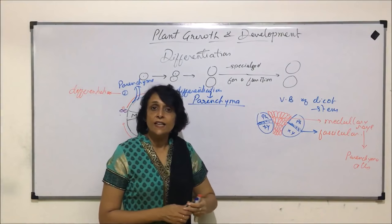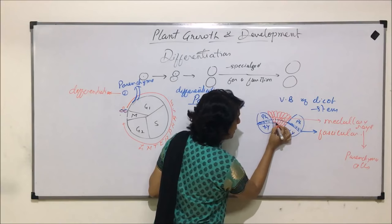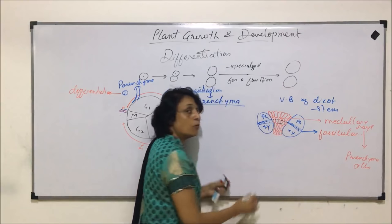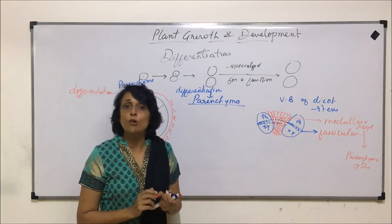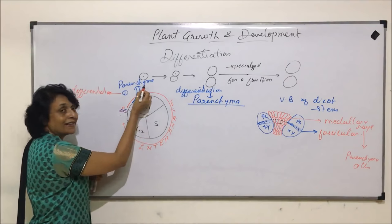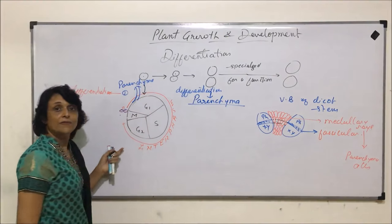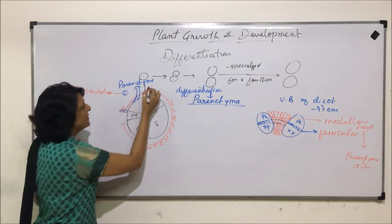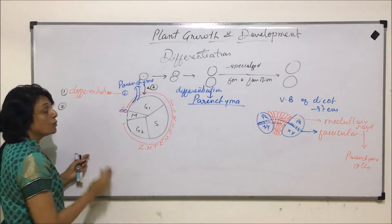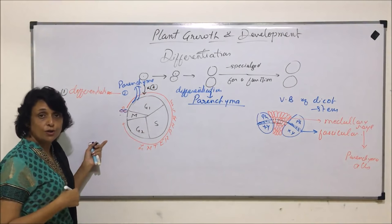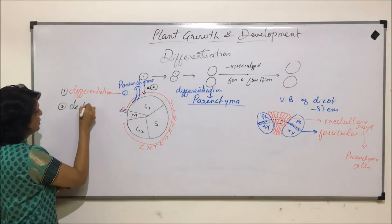Now when secondary growth has to take place, these parenchyma cells between the vascular bundles would again become meristematic — meaning they would start to divide again. So this parenchyma cell which was differentiated comes back into the cycle and would again divide. This process is called de-differentiation.